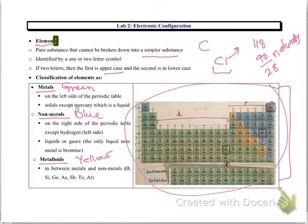Most of the metals are solids except mercury, which is a liquid. If you look, most of the metals - the green in color - are on the left side of the periodic table.